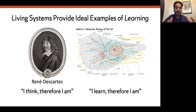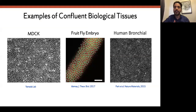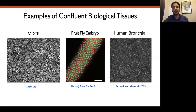Because biological systems are great examples of learning, we can start looking at these problems in terms of the learning framework. Biology is a wild west with many problems to look at. The problem I'm starting with is confluent biological tissues — MDCK monolayers, fruit fly embryo, or human bronchial tissue. These are 2D snapshots where every polygon is a cell. That's my system.